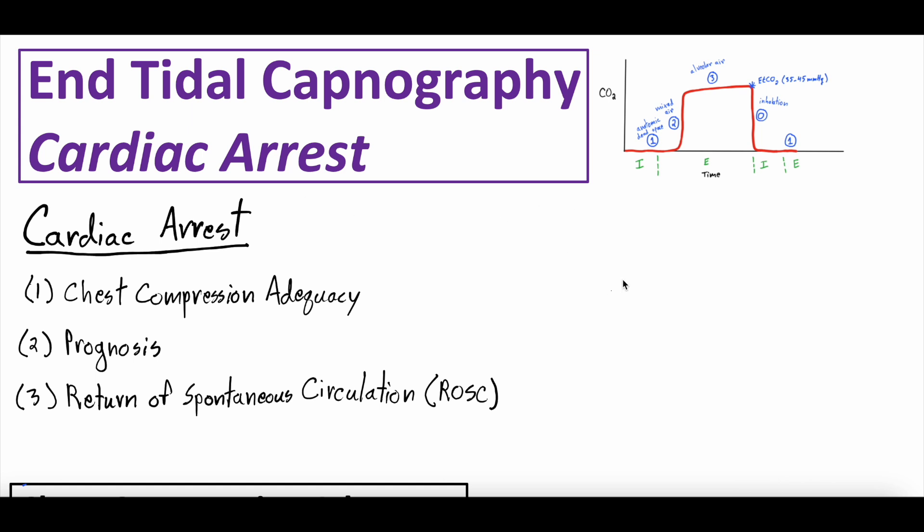All right. Thanks for sticking around. End tidal capnography and cardiac arrest. So for those of you less familiar, end tidal capnography is the detection of carbon dioxide being expired or exhaled from an individual. This here is the normal end tidal capnography waveform. We've talked about this in a previous video, so definitely check that out because we're not going to deep dive on it today. But it involves expiration with four different phases, one, two, three, and then zero.